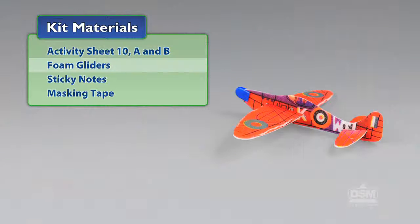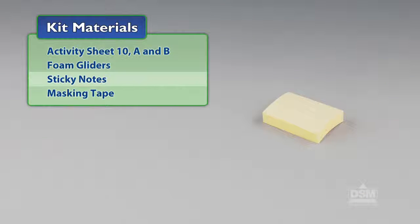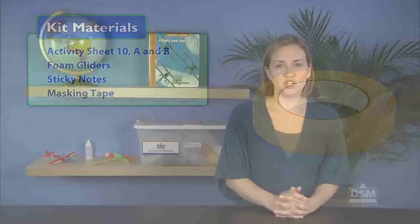You will need the following materials from the kit: Activity sheet 10, parts A and B, foam gliders, sticky notes, and masking tape. You will also need to provide scissors.